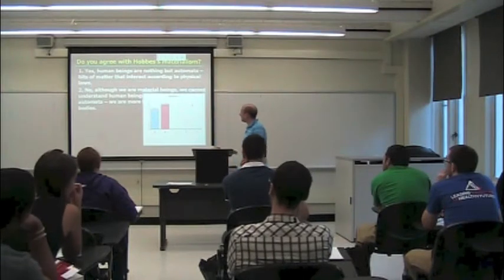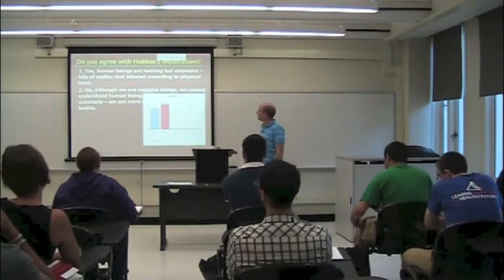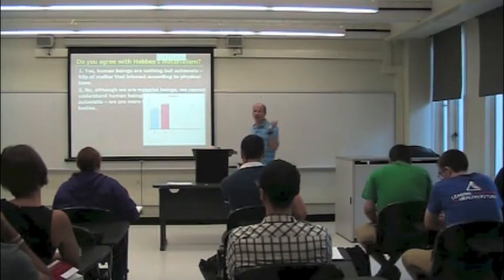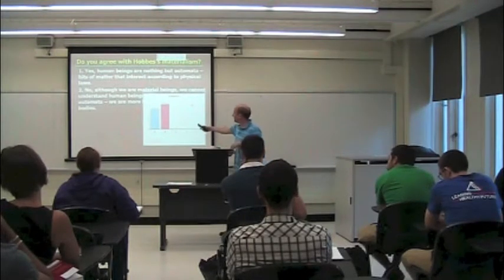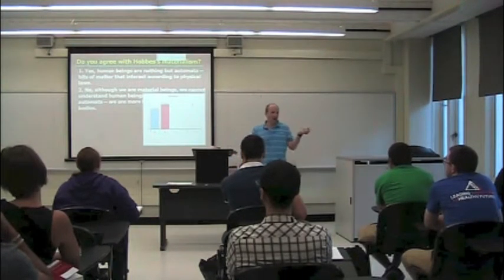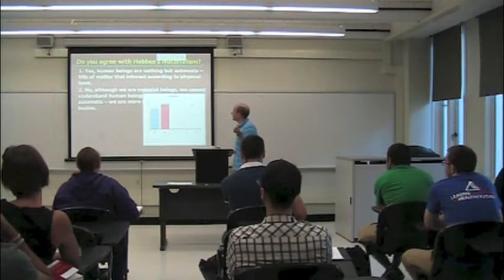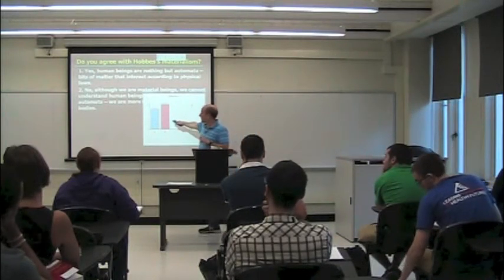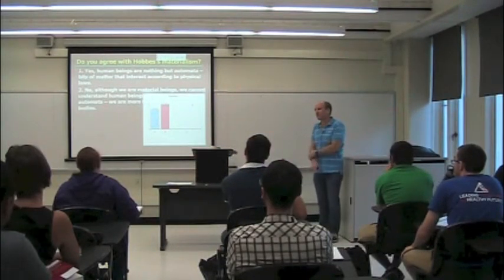So it's pretty evenly divided here. Slightly more than half of you thought that this materialistic picture maybe leaves out something, can't give a full explanation of human beings or human behavior. So here just under half were on board with Hobbes that the materialistic, the natural scientific explanation is all we need. So I'm curious about the majority here. We don't have time for much discussion, but what's missing?